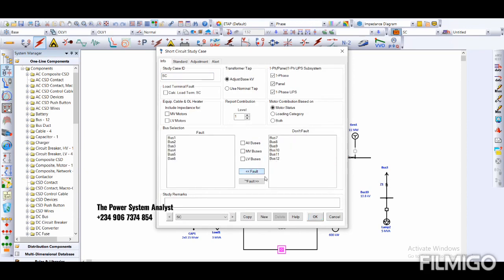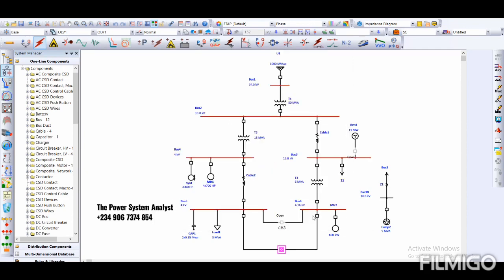And then click fault and then click fault enter. They automatically turn red showing that they are faulted already. Now we can run the three-phase and we are seeing the fault current at each bus.